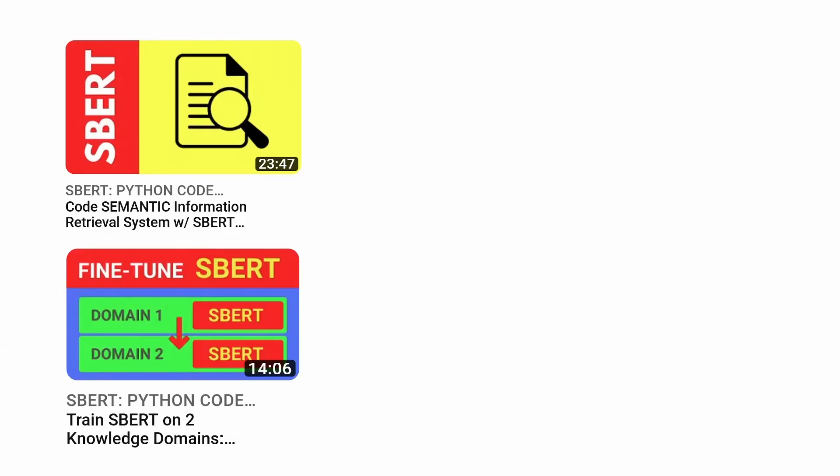Let me point out four specific videos for you. At the top, I show you the code — how to code in Python and PyTorch a semantic information retrieval system with sentence transformers. This is really some advanced neural information retrieval, and there's a specific video on my channel for that.